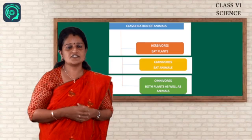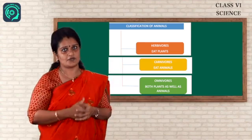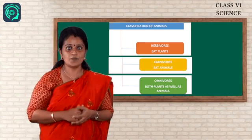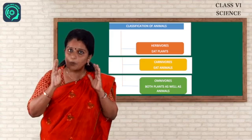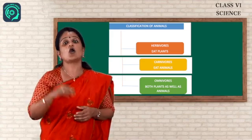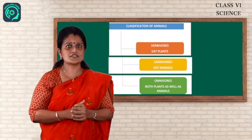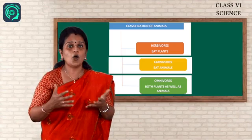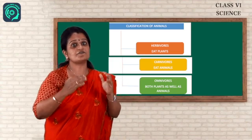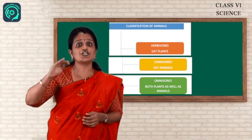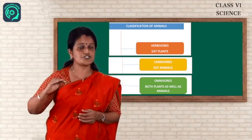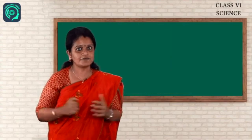Next one is the omnivores. The animals which eat both plants and animals are called the omnivores. Got it? For example, human beings, fox, these all belongs to omnivores. These are the classification of animals according to their food habit, according to their food habit. Is it clear for you students?